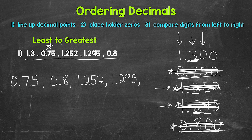And we are down to our last one: one and three tenths. So that comes last. Let's cross that off to show that we are done. We have all of our decimals in order from least to greatest.